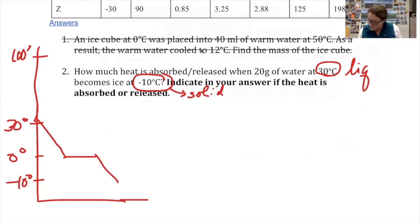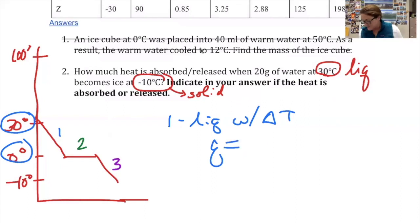How I approach the problem from here depends on what phase it's in. For step one, I'm getting these different colors. For step one, I have a liquid that's changing temperature. I can tell it's changing temperature because it's going from 30 down to zero. So that means I'm going to use the formula q equals mass times specific heat times change in temperature.